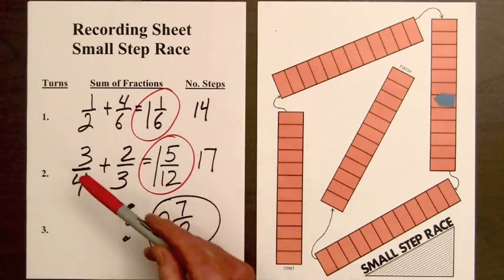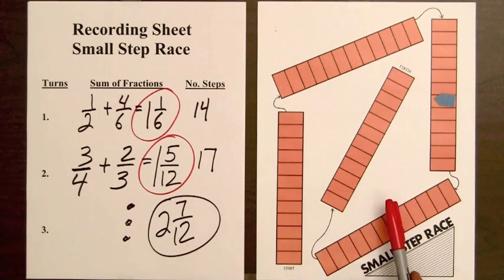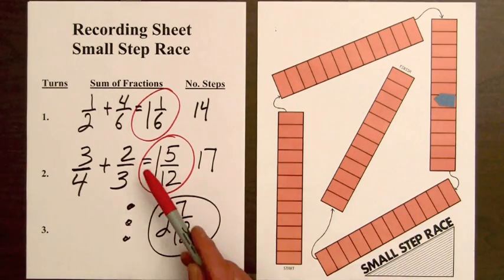So recording sheets like this give students a chance to use the concrete model, the small step race mat, and also to write equations and check on the sums of the mixed numbers.